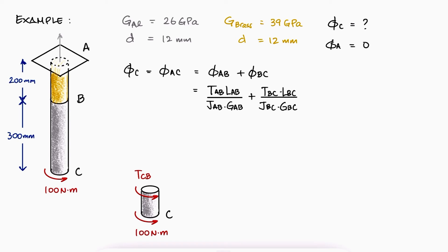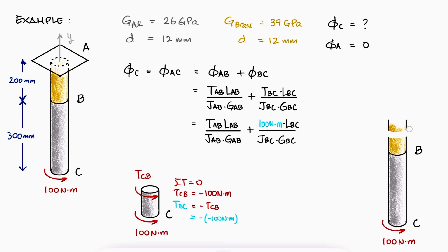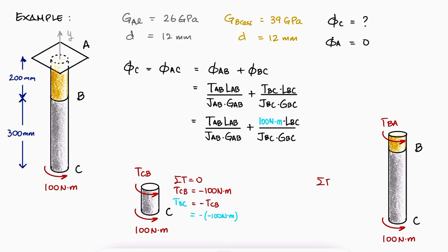We solve for TCB and the negative of that will give us what we're looking for, TBC. A cut from C to somewhere between A and B will allow us to find TBA, again assumed to be positive, and we use TBA to find TAB, which is what we need.